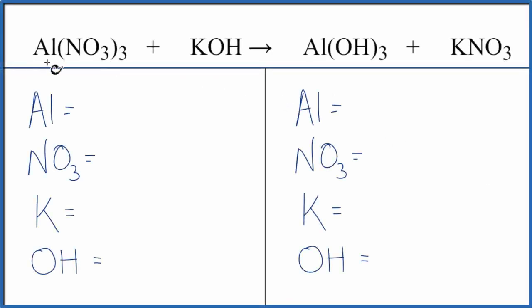In this video, we'll balance the equation Al(NO3)3 plus KOH. That's aluminum nitrate plus potassium hydroxide. Let's count the atoms up.